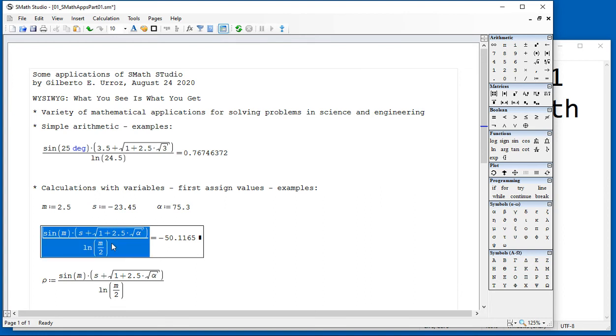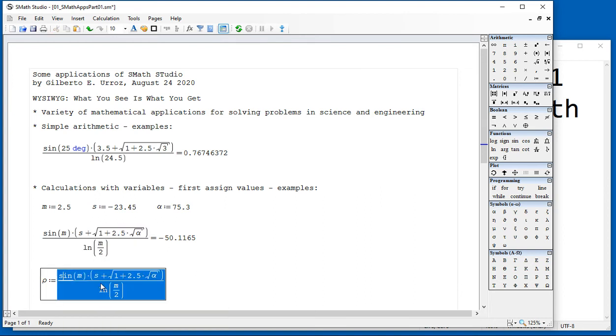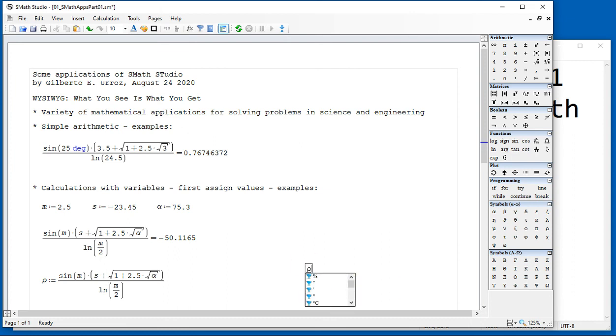The same expression that I typed in here, I typed on the right-hand side of the assignment operator, assigning it into the variable rho. The variable rho is a Greek letter, and you have symbols here in the Greek panel. You can get it from there, or you can simply type R, control G, and that converts into rho.